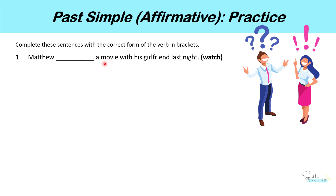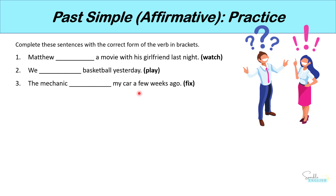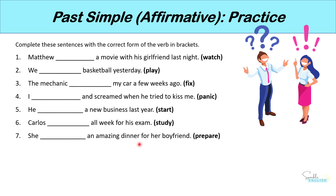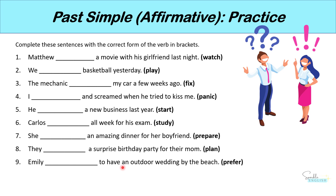Number one: Matthew [watch] a movie with his girlfriend last night. Number two: we [play] basketball yesterday. Number three: the mechanic [fix] my car a few weeks ago. Number four: I [panic] and screamed when he tried to kiss me. Number five: he [start] a new business last year. Number six: Carlos [study] all week for his exam. Number seven: she [prepare] an amazing dinner for her boyfriend. Number eight: they [plan] a surprise birthday party for their mom. Number nine: Emily [prefer] to have an outdoor wedding by the beach. And finally number ten: he [want] to go to Australia for his 30th birthday.